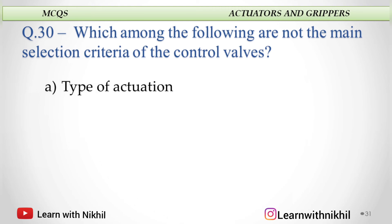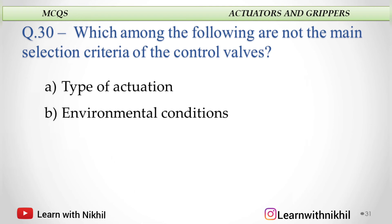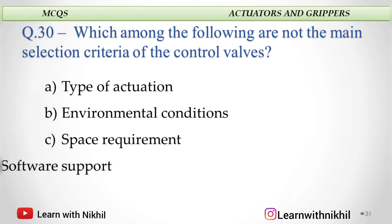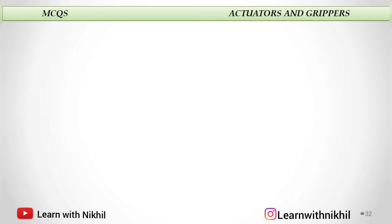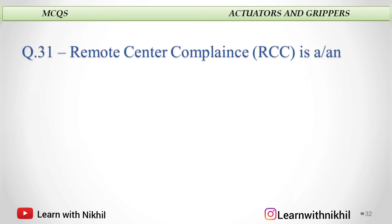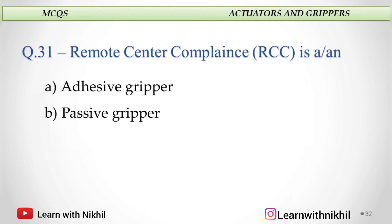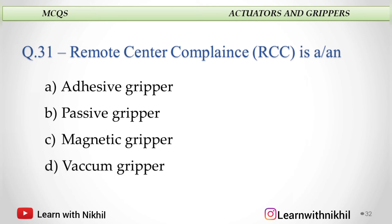Which among the following are not the main selection criteria of control valves? A. Type of actuation, B. Environmental conditions, C. Space requirement, or D. Software support? And the answer is software support. Remote center compliance (RCC) is: A. An adhesive gripper, B. A passive gripper, C. A magnetic gripper, or D. A vacuum gripper? RCC is a type of passive gripper.